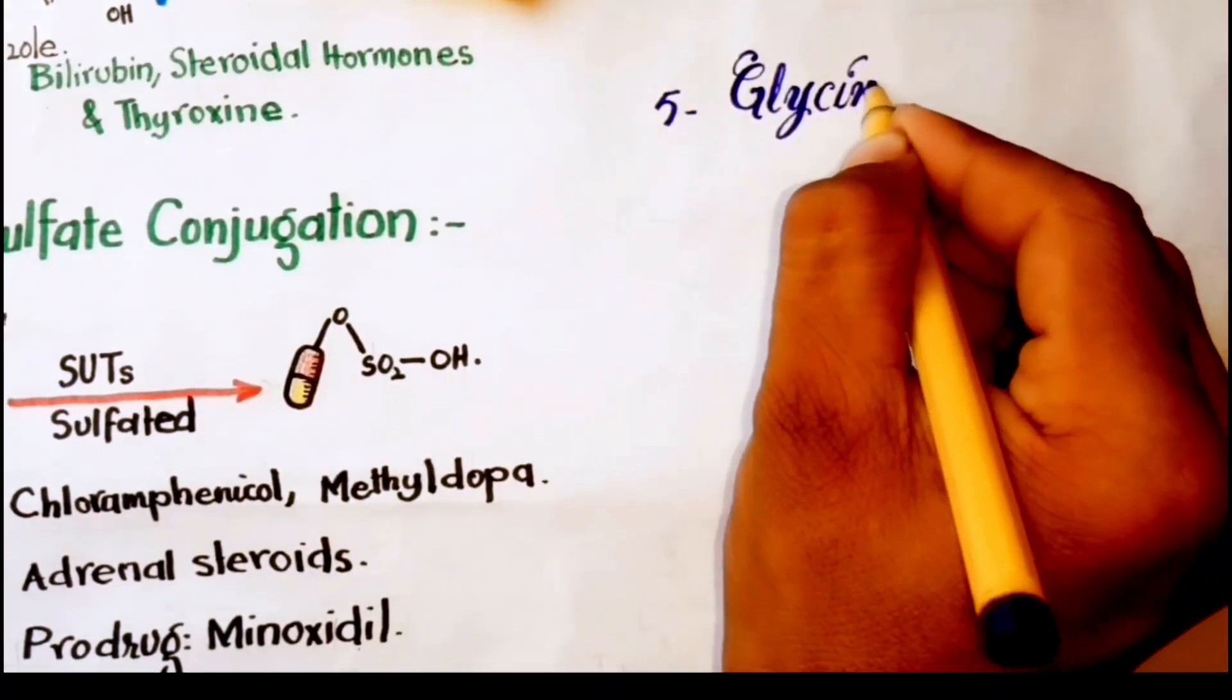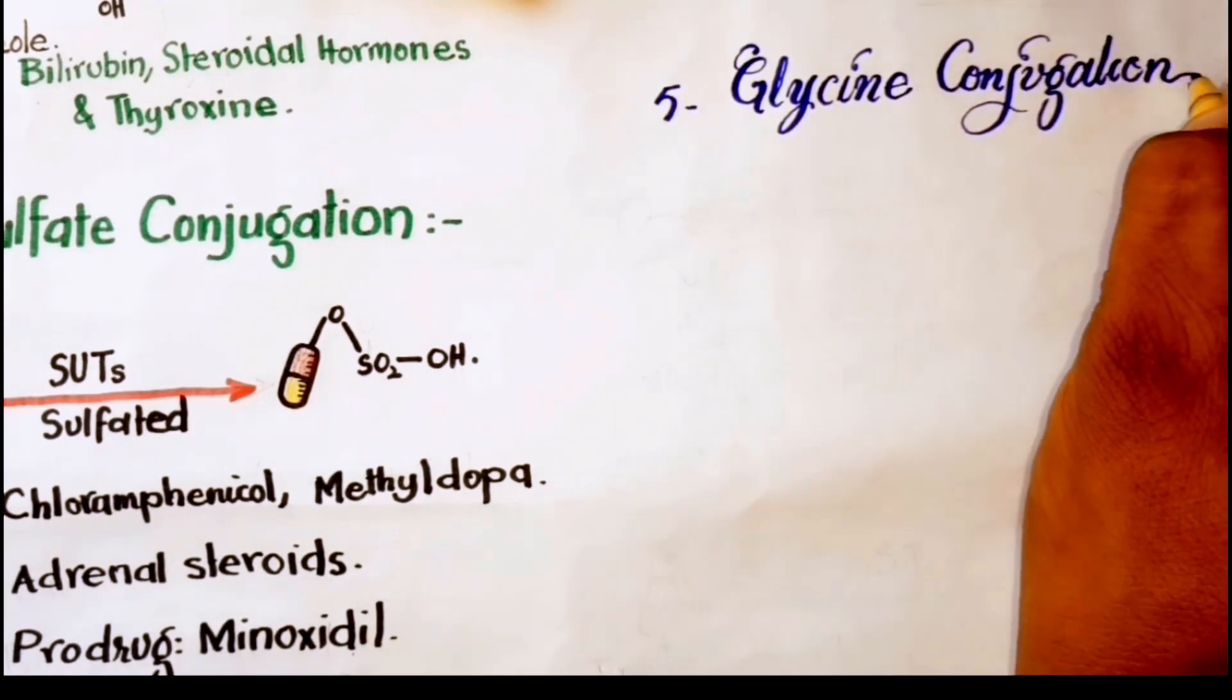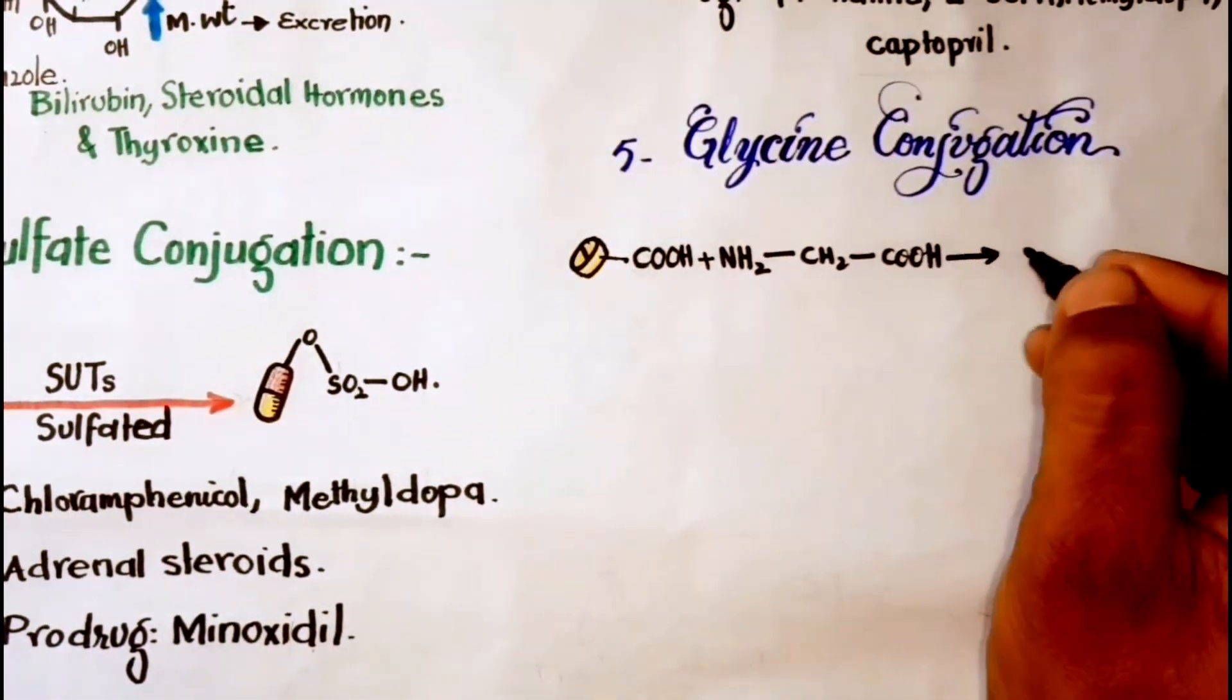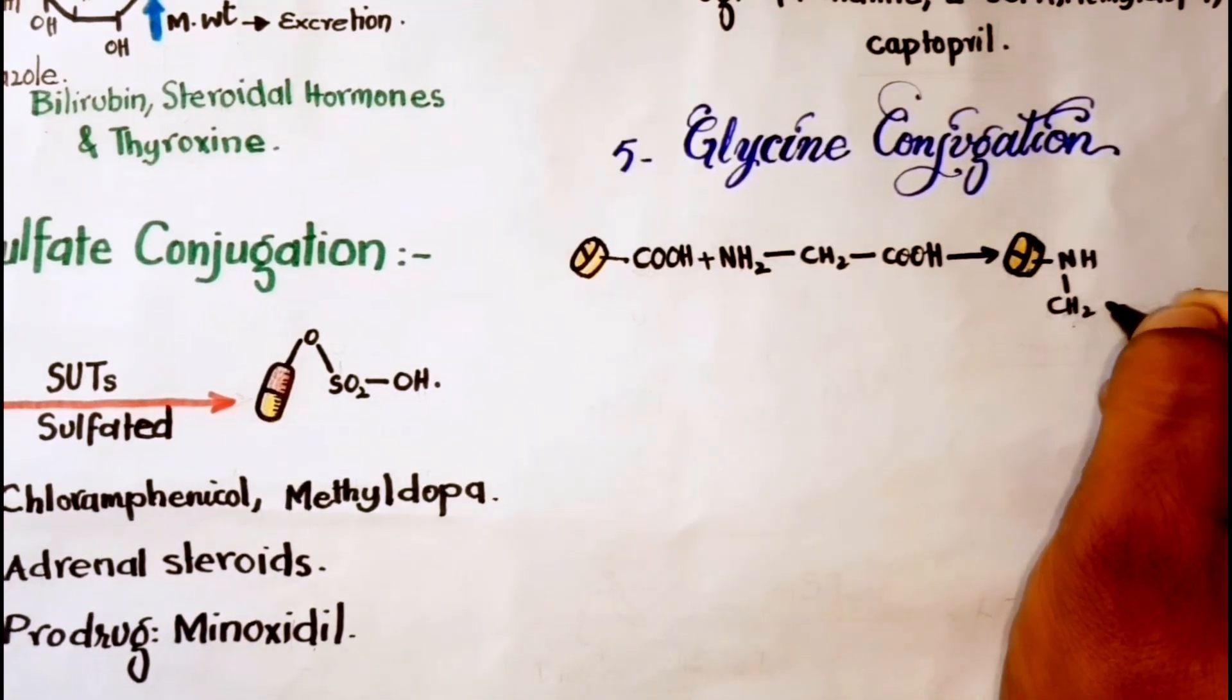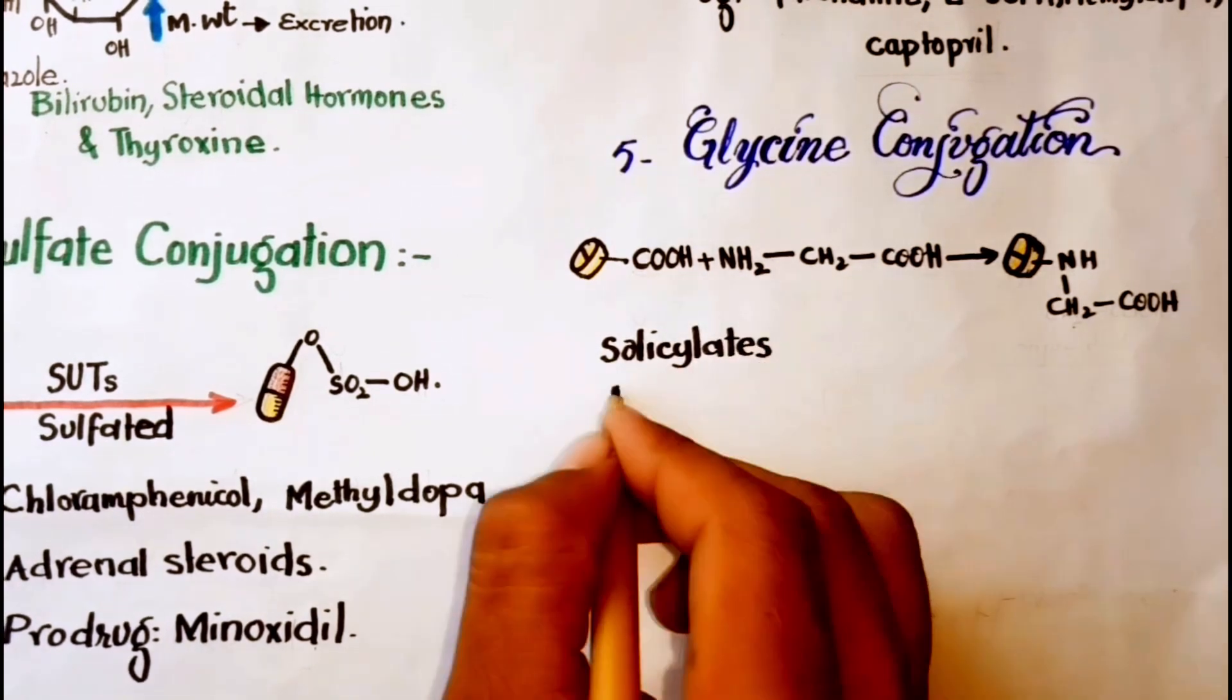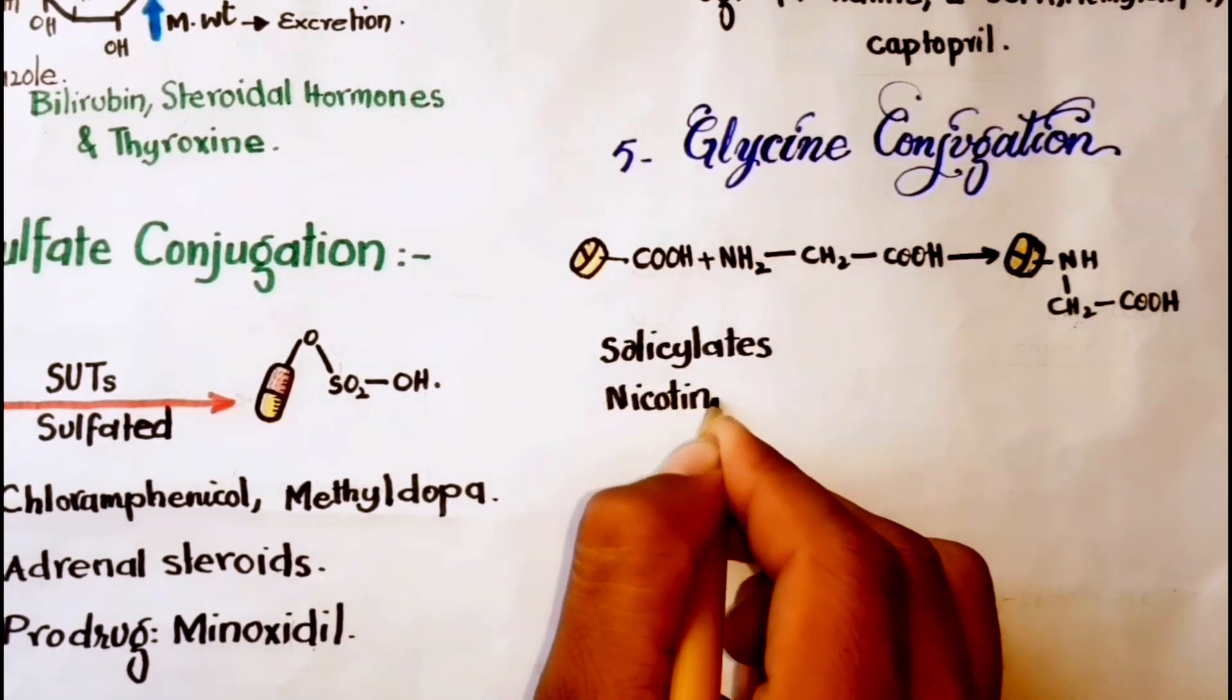Next is glycine conjugation. Drugs having carboxylic acid group are conjugated with glycine. For example, salicylates and nicotinic acid. This is a minor pathway of metabolism.